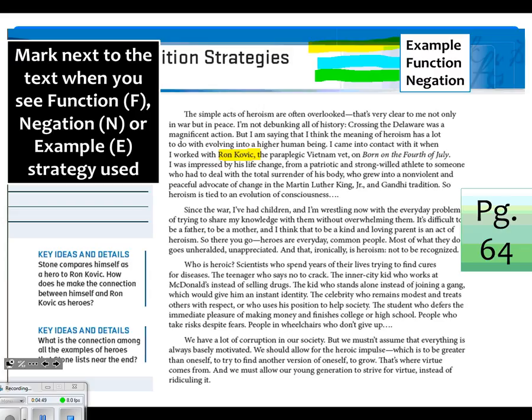Next paragraph, go ahead Isaiah, read that one. Since the war, I've had children and I'm wrestling with the everyday problems of trying to share my knowledge with them without overwhelming them. It is difficult to be a father, to be a mother, and I think that to be a kind and loving parent is an act of heroism. So there you go, heroes are everyday, common people. Most of what they do goes unappreciated. And that, ironically, is heroism, not being recognized. Okay, take a moment, pull out the strategies that you see.